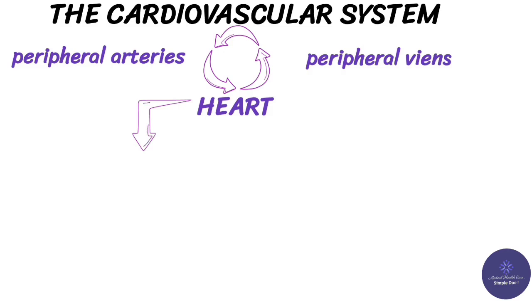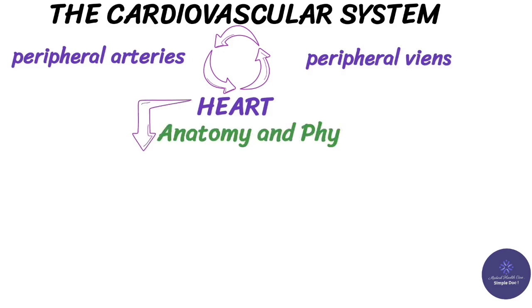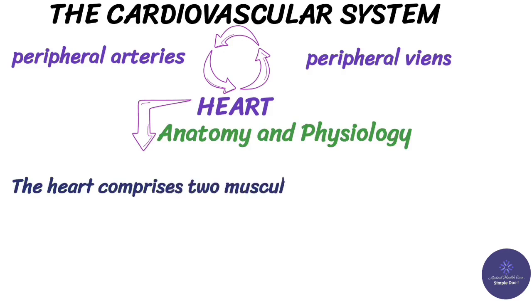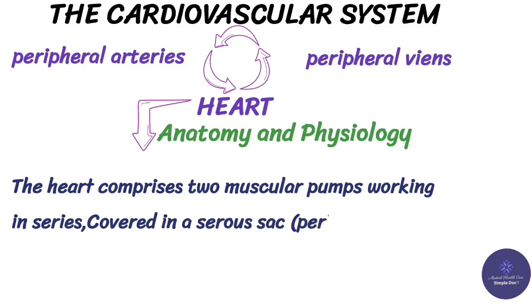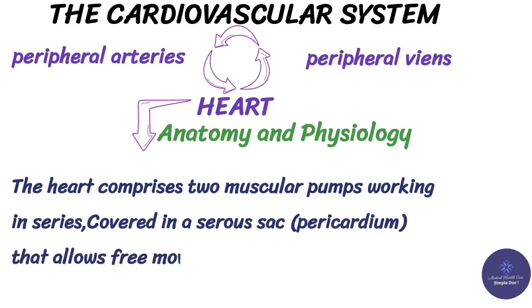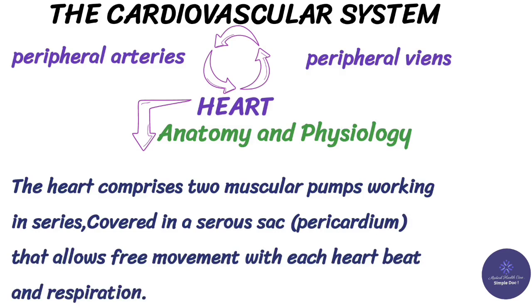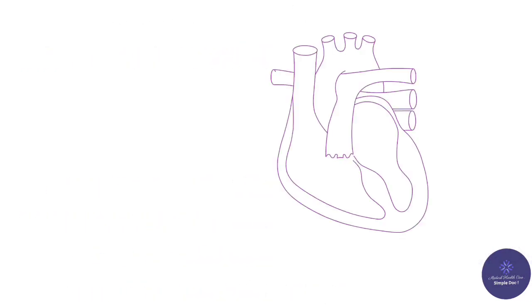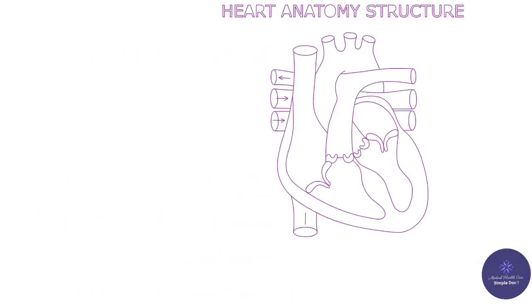About anatomy and physiology, at first you should know about these points. The heart comprises two muscular pumps working in series, covered in a serous sac called the pericardium, that allows free movement with each heartbeat and respiration. It is important to remember heart anatomy structure as follows.